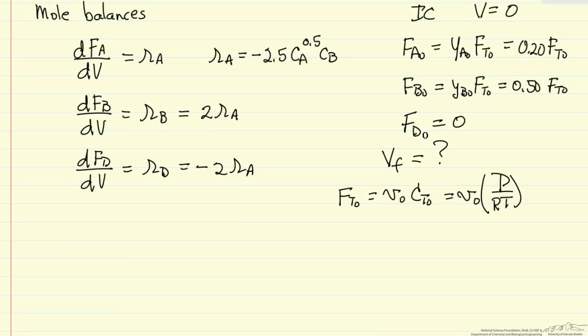Think of the ideal gas law, you could write it as pressure times volume per time, which is V0, and moles per time, so that's FT0 over RT, just ideal gas law. And we're given that V0 is 50 liters per minute.